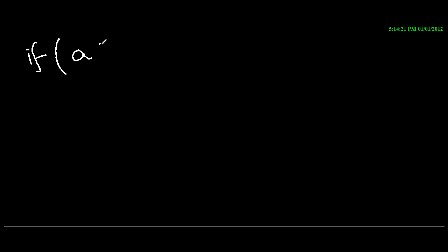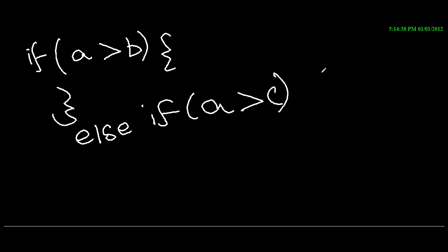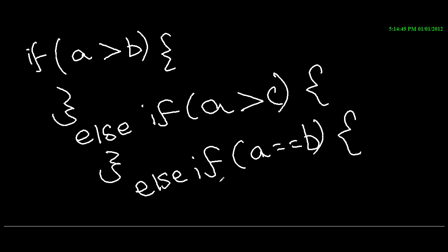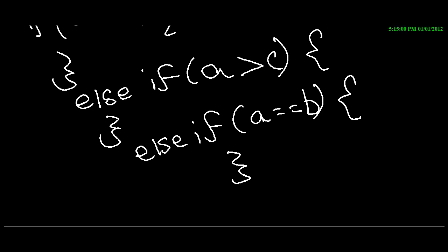Now let's say you want to check something else. You write else if a greater than c, and you give something here maybe. Then you write else if equal to b, whatever it is that you want, so it doesn't become monotonous. You can keep on constructing your if else if else if in this manner, so it's like multiple branching.